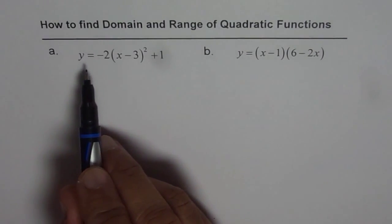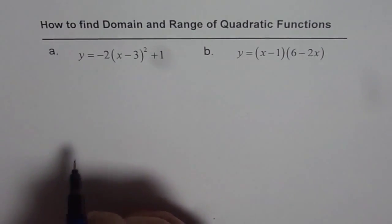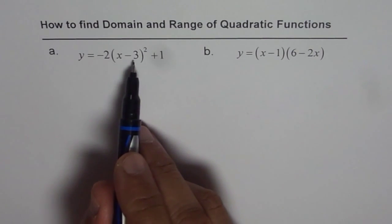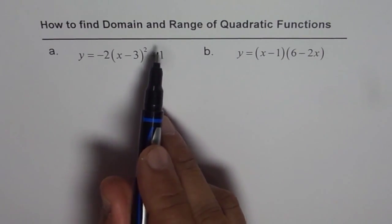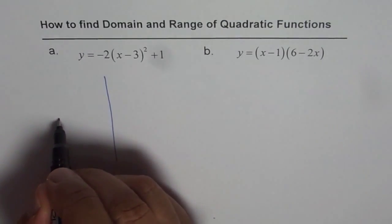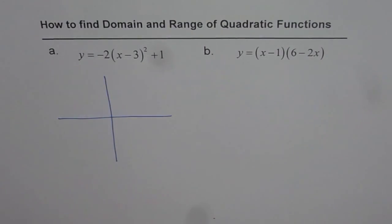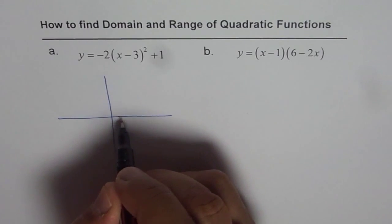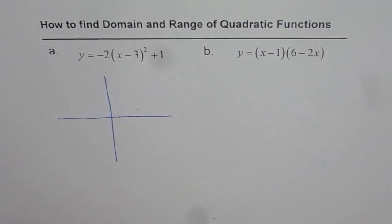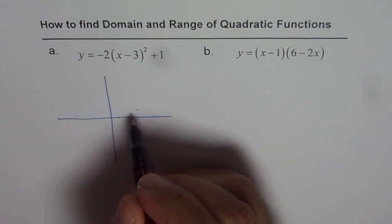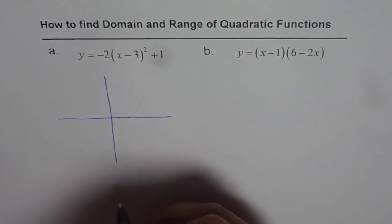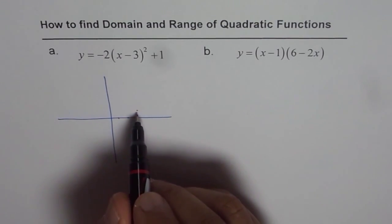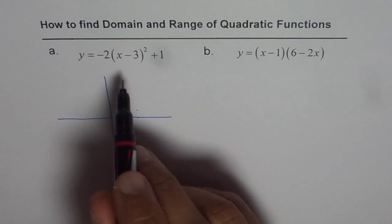The first one is y equals minus 2 times x minus 3 whole square plus 1. This parabola opens downwards because of the minus sign. It has been translated 3 units to the right and 1 unit up. The vertex is at (3, 1) and it opens downwards. So we can already see that the range is y less than or equal to 1, and the domain is all real numbers.